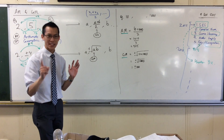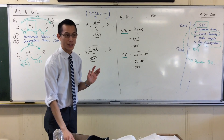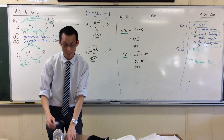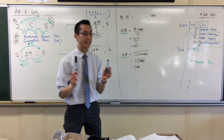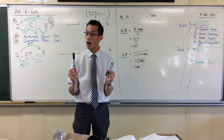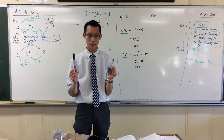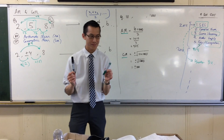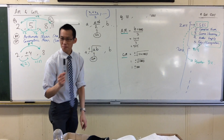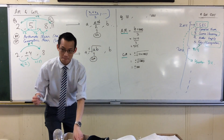We know exactly why — we drew a diagram and we coloured it. Can you tell me why they can't be different signs? These are always positive, always negative.